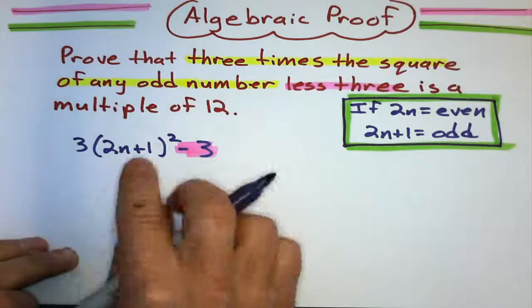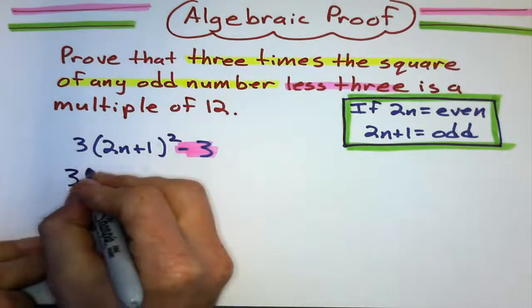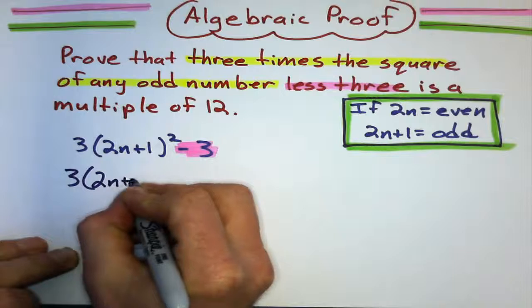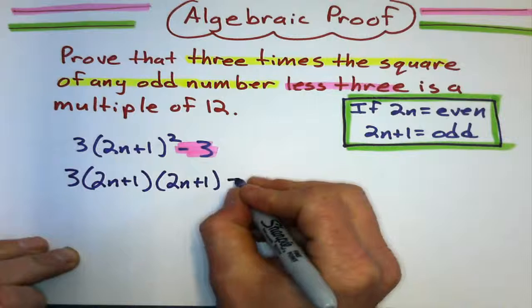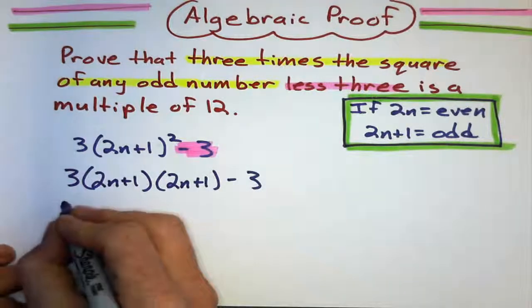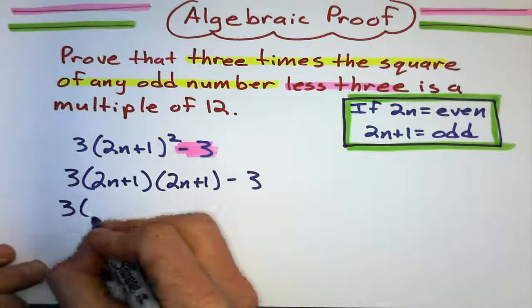First, we have to remember BEDMAS. Exponents come first. First, this is a double brackets one in disguise. 2n plus 1 times 2n plus 1, minus 3. And here, I think I'm going to do some first outside, inside last.